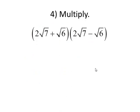One last example. First times first, 2 square root of 7 times 2 square root of 7, 2 times 2 is 4. Square root of 7 times square root of 7 is 7. Minus, last times last, square root of 6 times square root of 6 is 6. We're left with 28 minus 6, which is 22. Again, notice that our result did not contain a square root.